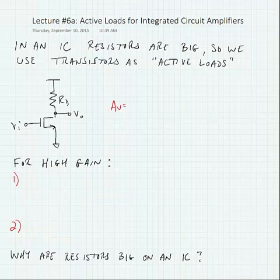So here if we look at our common source amplifier we know from inspection that the voltage gain for this amplifier is minus gm times rd in parallel with the output resistance of the transistor.